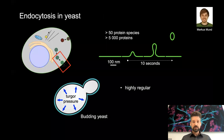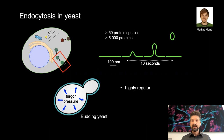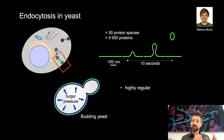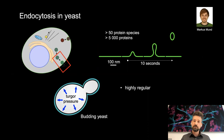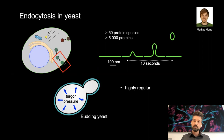We started investigating this question using budding yeast as a model system. Endocytosis in yeast has been shown to be highly regular, which is very useful, and these cells make it easy to label target proteins with fluorophores through homologous recombination — so we can easily label two, three, or four different proteins simultaneously and combine this with lesions and mutations. Endocytosis is conserved from yeast to mammals, but one important difference is that yeast cells have a cell wall and high internal turgor pressure, which pushes the membrane against the cell wall.